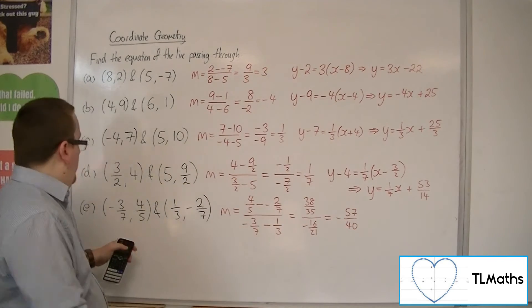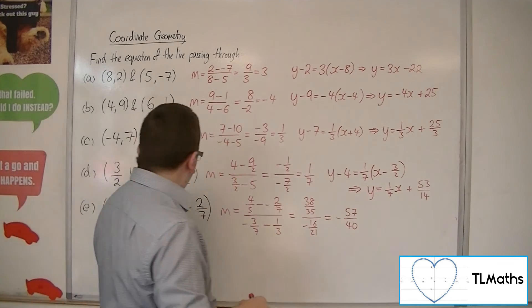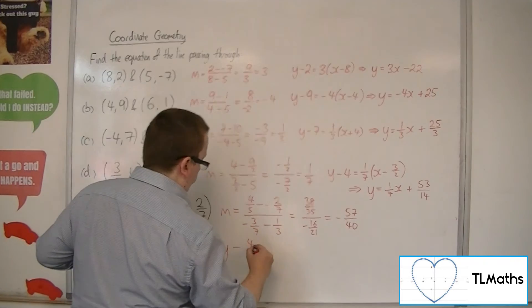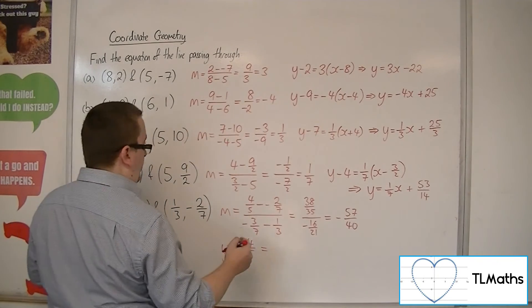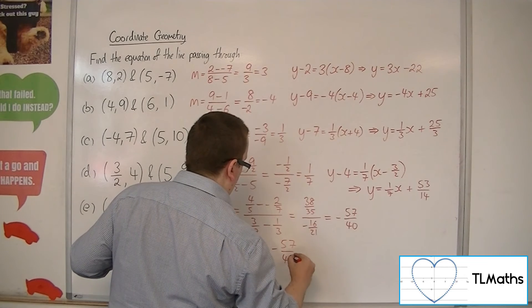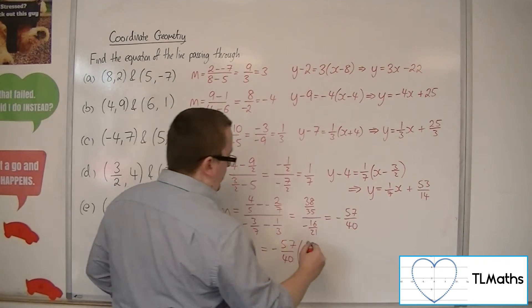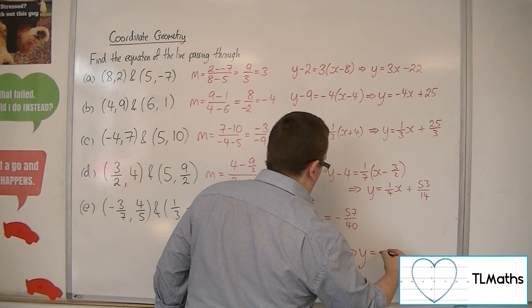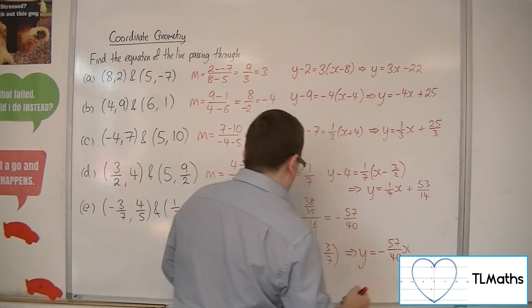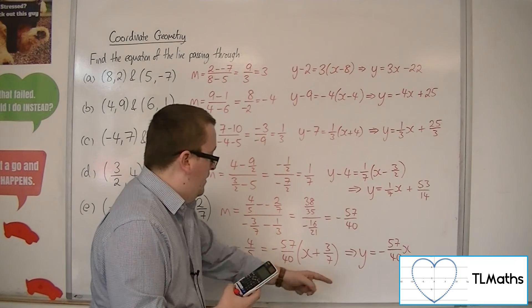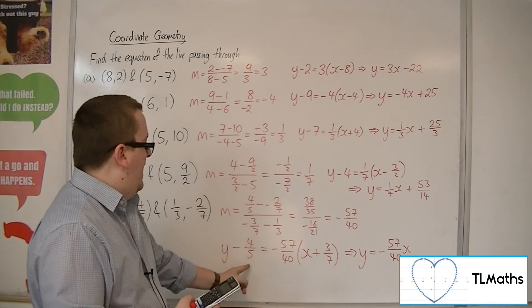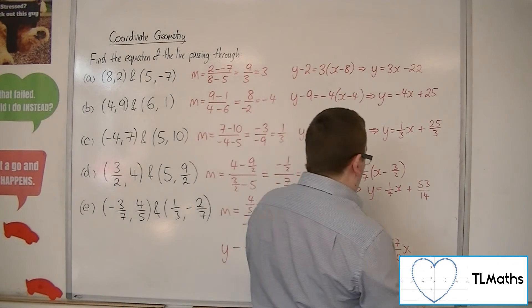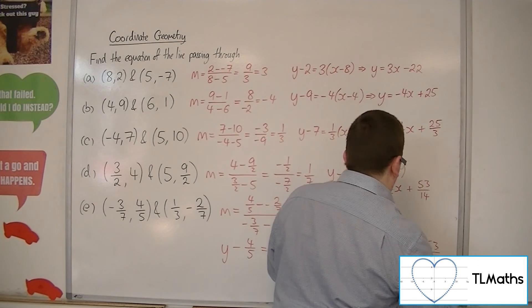So using these coordinates as x1, y1, we will have y minus 4 fifths is equal to minus 57 over 40 times (x plus 3 sevenths). So y will be equal to minus 57 over 40 times x. Minus 57 over 40 times 3 sevenths gets me minus 171 over 280, then add the 4 fifths, and that gives me 53 over 280.